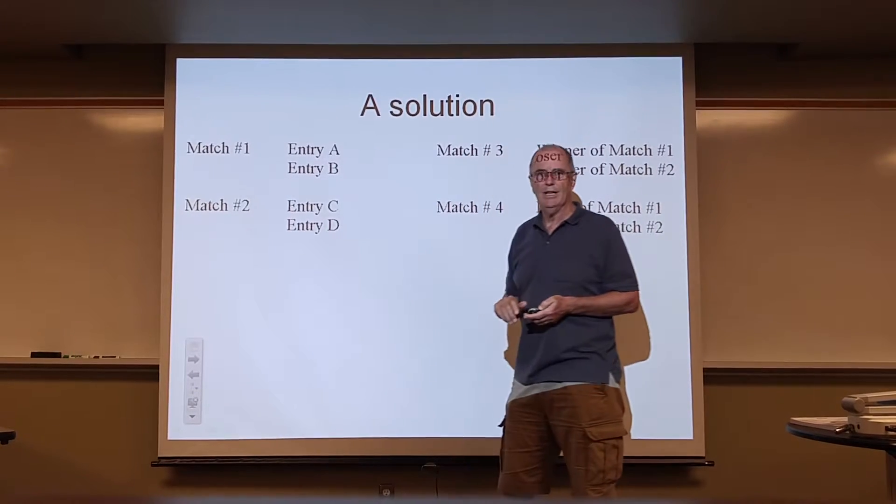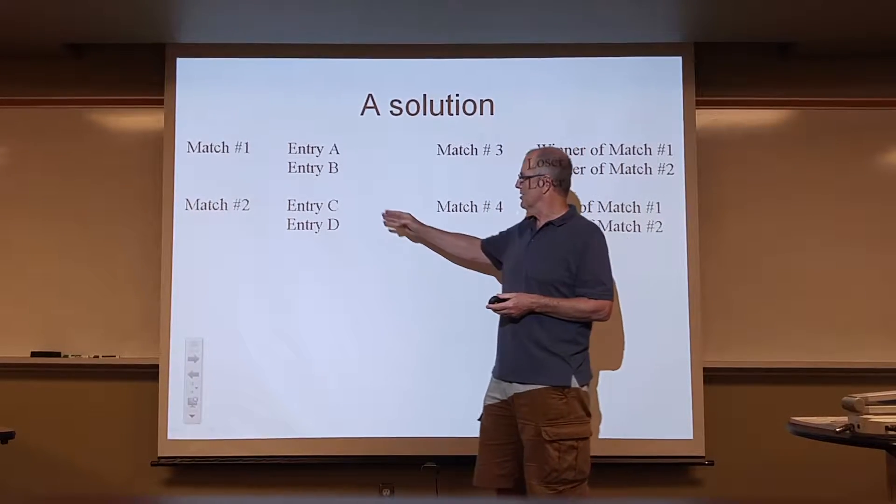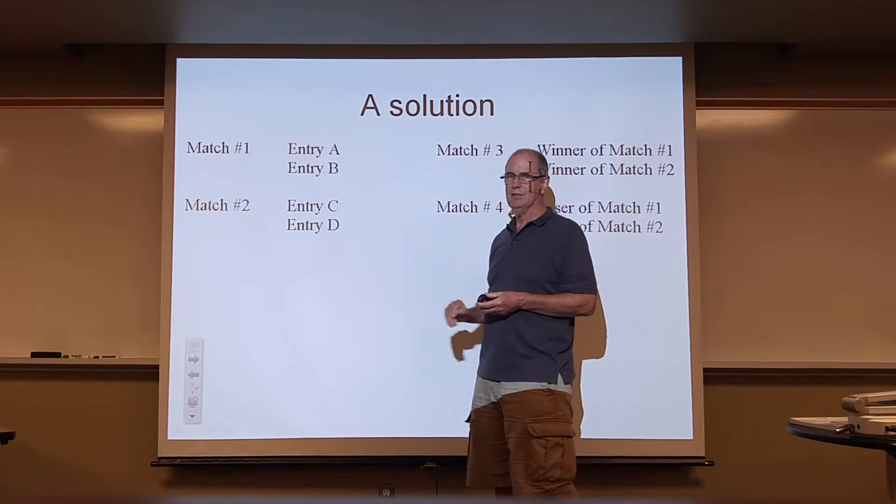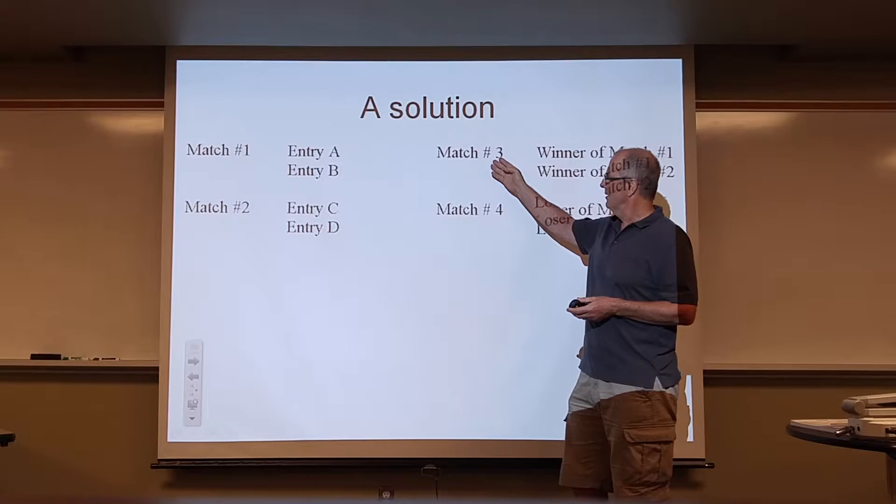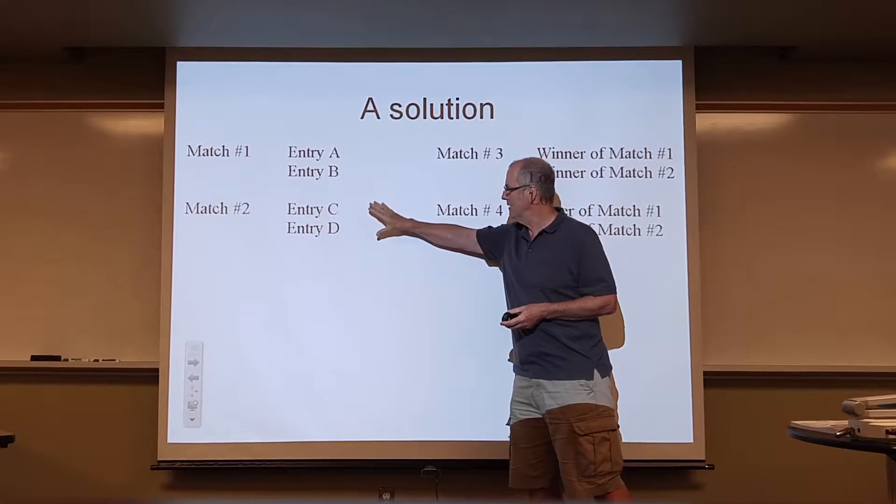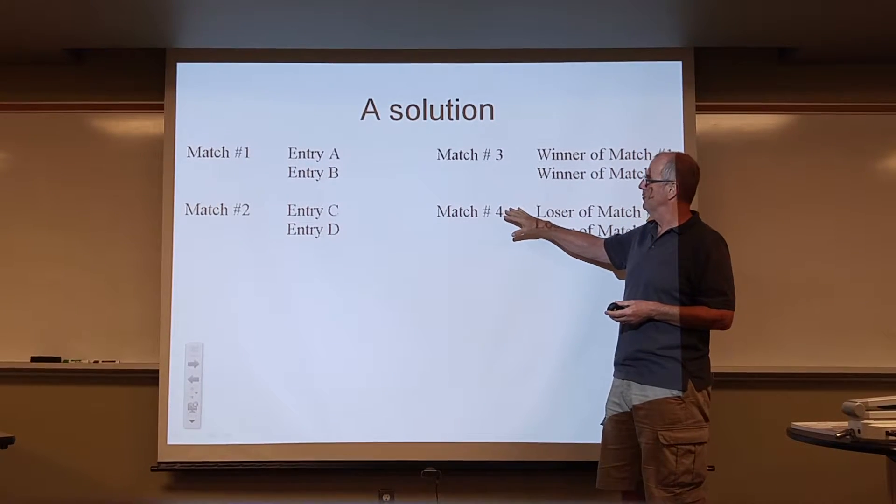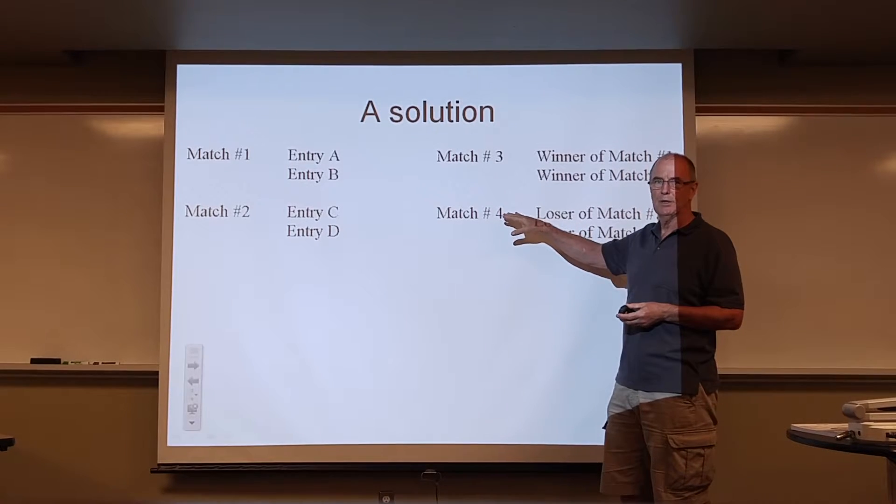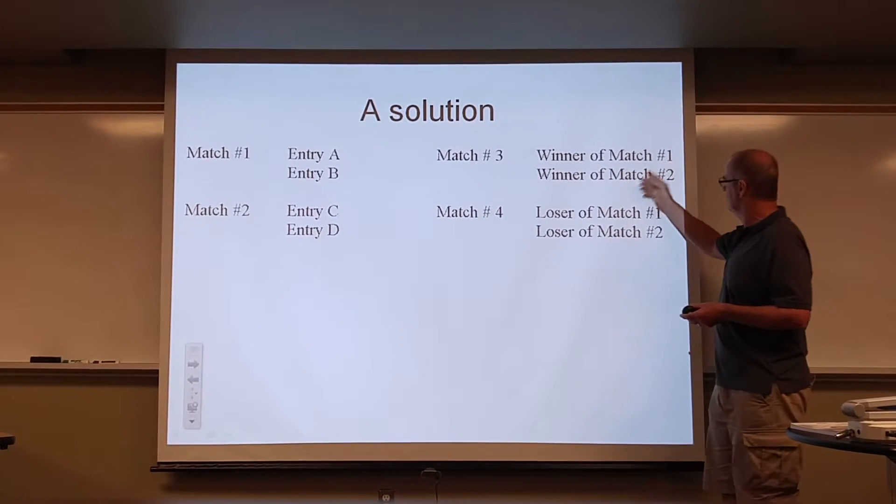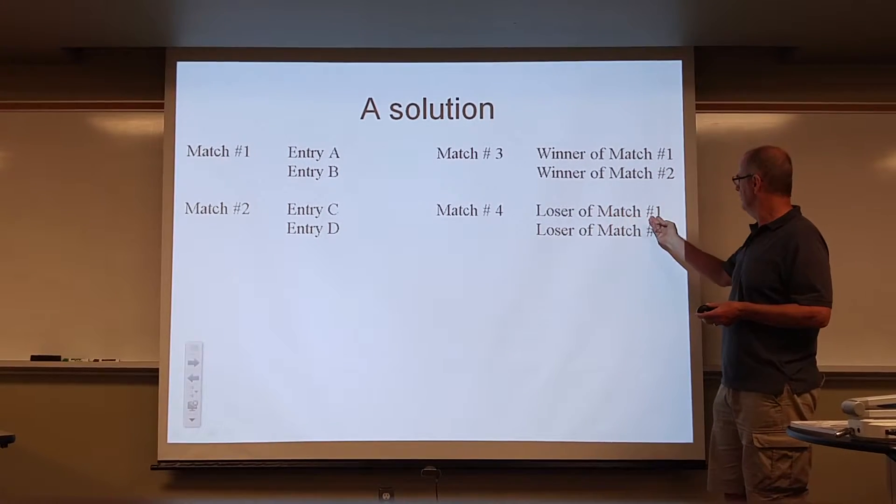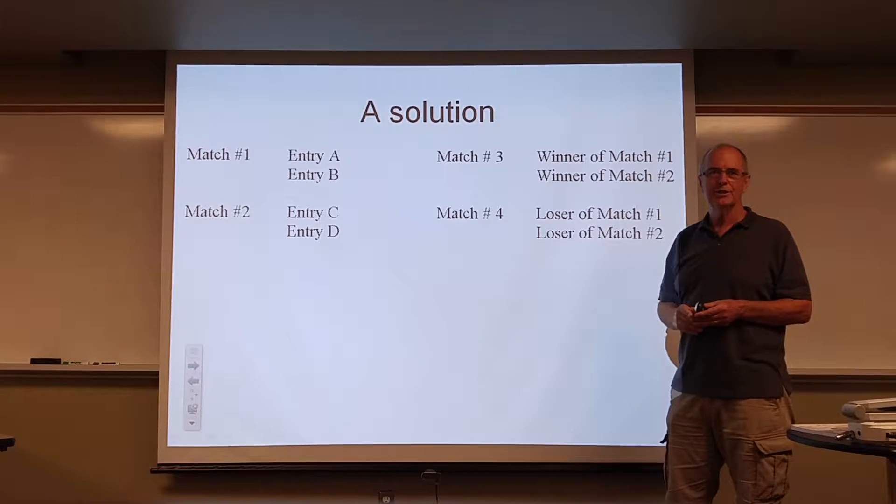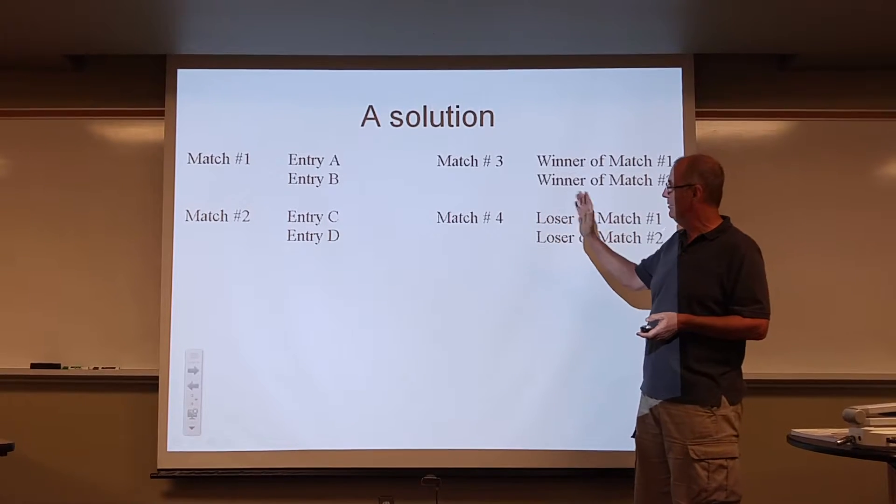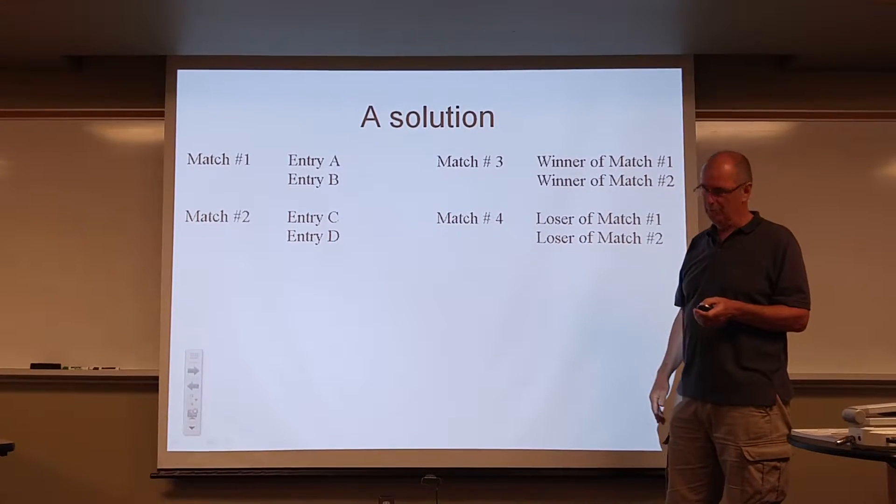Match number one, let's just say A plays B, and match number two, C plays D. After that, the winners of match one play each other, and the losers of match two play each other. So winner of match one, winner of match two, loser of match one, loser of match two. Then we figure out who are the top two teams. So we've only played two games. How do we determine who won?